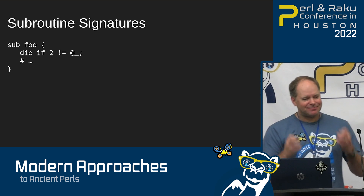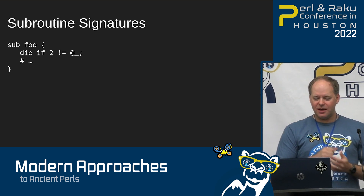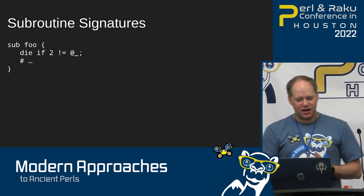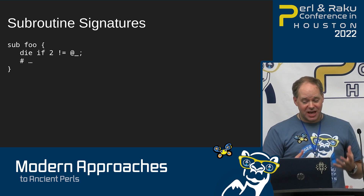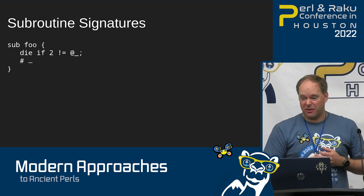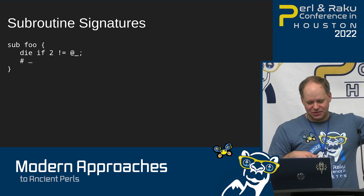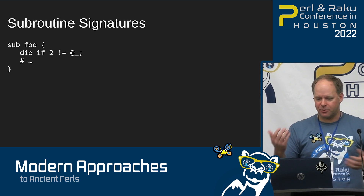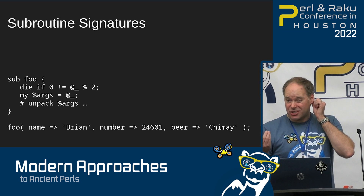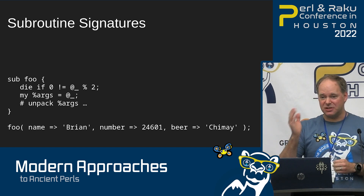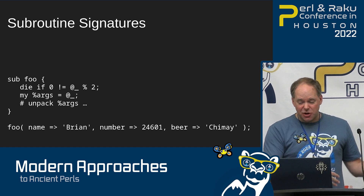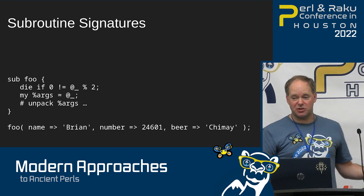Subroutine signatures. There isn't a really great, feature-equivalent way to recreate subroutine signatures, at least that I can figure out. But there are some good approaches you can and should take when unpacking your subroutine arguments. First, just count your arguments for sanity's sake. You should probably raise a useful message depending on what your subroutine is doing. You should also consider having your subroutine take a hash as an argument. You see a lot of advice around this — I think this is one thing that Damian suggests. It definitely makes calls to your subroutine easier to read, even if there's a bit of boilerplate in the subroutine itself.